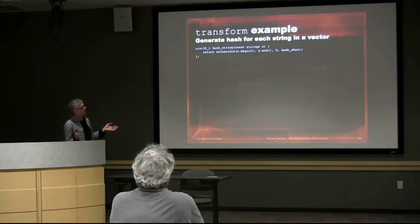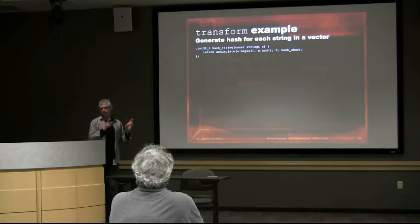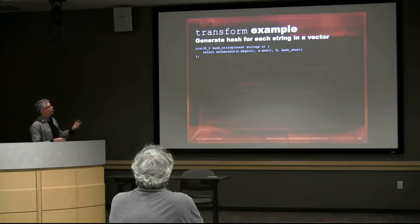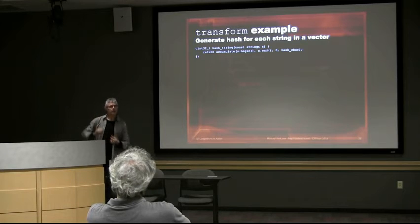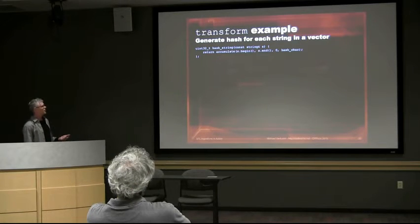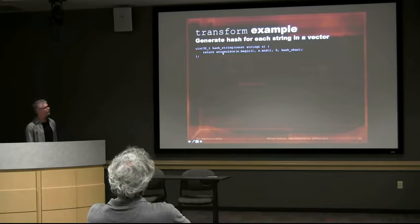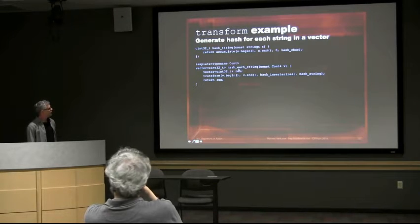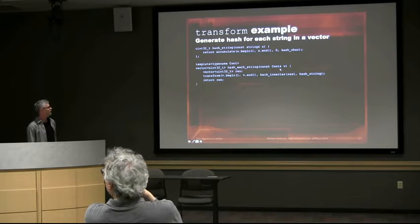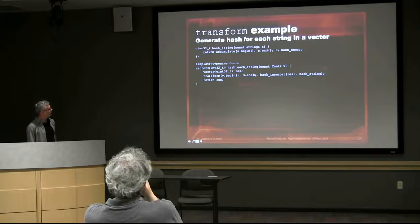That's kind of cool, but how often do you really need that? What you probably want is to hash each of the strings in the vector individually and generate a hash for each of them. So we're going to take a vector of strings and create a vector of hashes. This is very similar but not exactly the same — we're going to use accumulate again to do our individual string hashing and create a function that hashes each string.